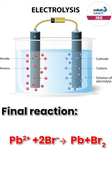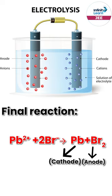Where does the Pb go? To the cathode. And where will the Br₂ be? At the anode.